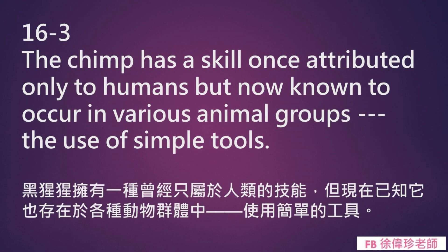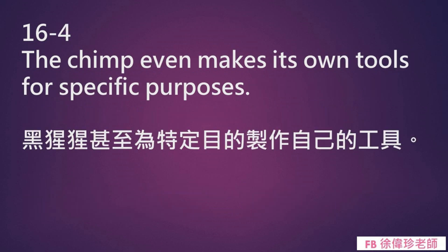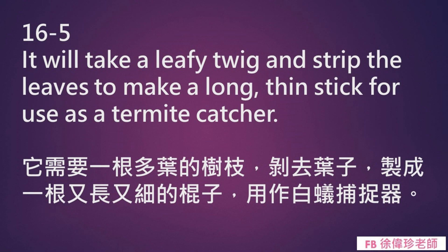The chimpanzee has a skill once attributed only to humans but now known to occur in various animal groups: the use of simple tools. 黑猩猩拥有一种曾经只属于人类的技能，但现在已知它也存在于各种动物群体中——使用简单的工具。 The chimpanzee even makes its own tools for specific purposes. It will take a leafy twig and strip the leaves to make a long, thin stick for use as a termite catcher. 黑猩猩甚至为特定目的制作自己的工具。它需要一根多叶的树枝，剥去叶子，做成一根又长又细的棍子，用作白蚁捕捉器。